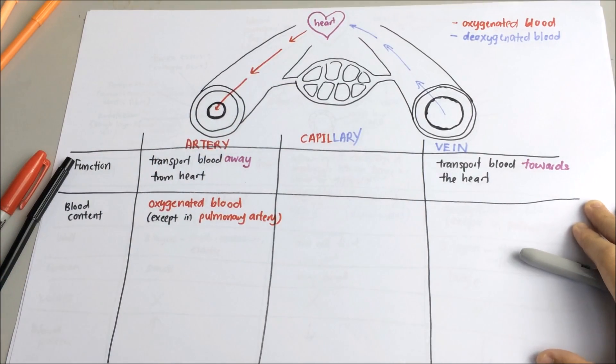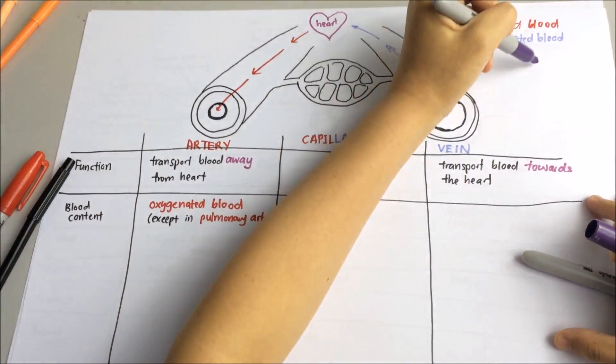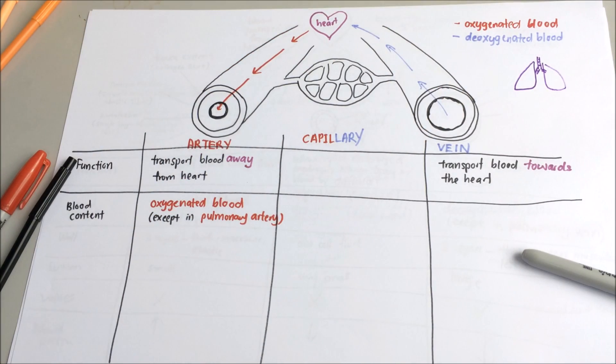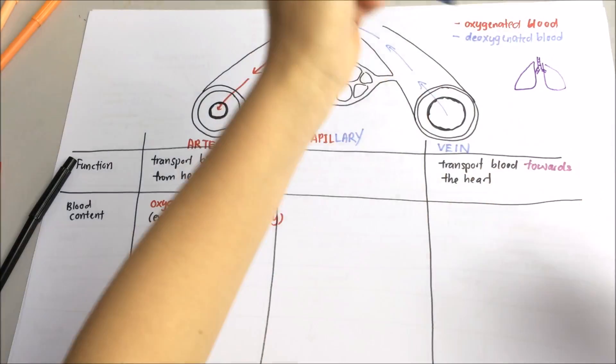The pulmonary artery should be in blue color. Remember that pulmonary artery is the only artery that carries deoxygenated blood from the heart to the lungs for oxygenation.